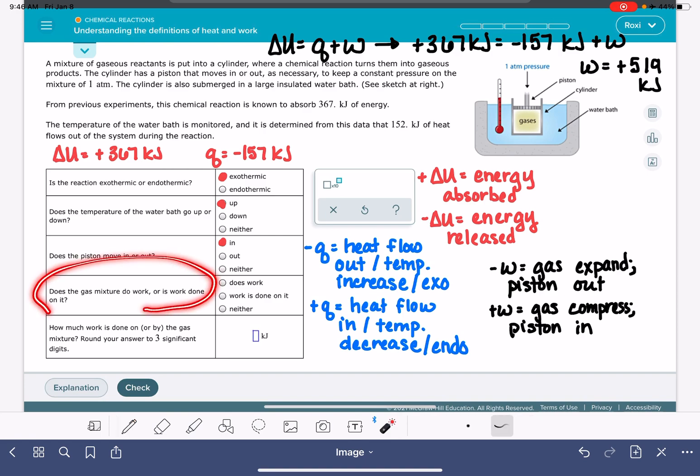Does the gas mixture do work or is work being done on it? If W is positive, the piston is moving in, this means that work is done on the system. If W is negative, work is being done by the system.